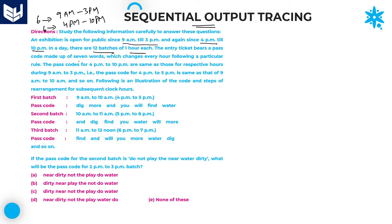The entry ticket bears a passcode made up of 7 words, which changes after every one hour following a particular rule. The passcode for 4 PM to 10 PM is the same as that for the corresponding hours during 9 AM to 3 PM. So 9 AM–10 AM is same as 4 PM–5 PM, 10 AM–11 AM is same as 5 PM–6 PM, and so on for all six batches.